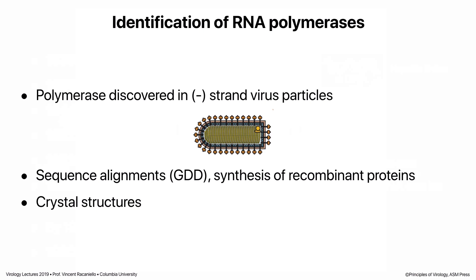When we became able to sequence entire viral genomes starting in the 1980s, we began to see that RNA polymerases had signature sequences — including a conserved sequence of three amino acids, Gly-Asp-Asp (GDD), which is part of the active site of the polymerase. People would sequence a genome, recognize it looked like a polymerase, put the gene in a plasmid, express it in cells, and show polymerase activity. Eventually, when enough protein could be purified, crystal structures were solved by x-ray crystallography. Now we have hundreds of structures of viral RNA polymerases.